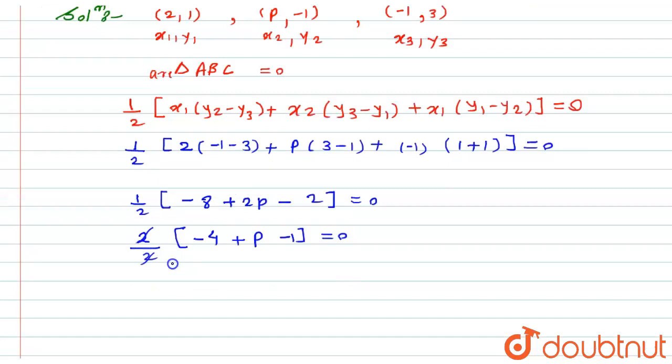2, this 2 will get cancelled, and here we will get P minus, -4-1 will be -5, is equal to 0. So here I will get the value of P, that is P is equal to 5. So here is the solution for this particular question. I hope you will like the solution. Thank you.